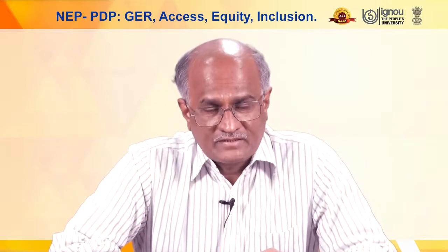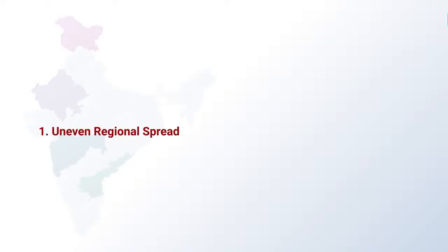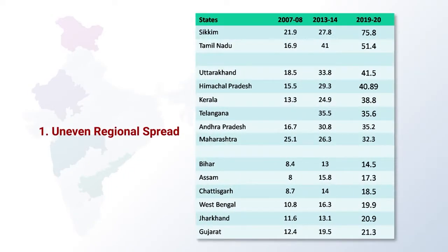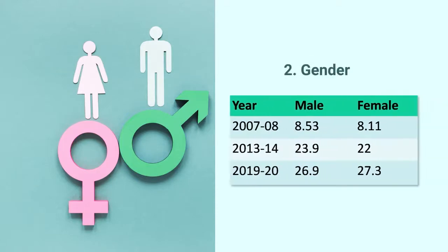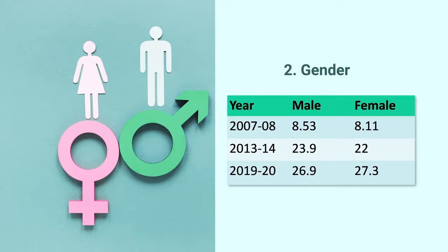What it tells us is the spread of higher education is not uniform across the country, but has been uneven across different states. If we look at gender, it also tells us a story. The pattern is more or less similar between male and female, but one interesting fact in 2019-20 shows that women are increasingly participating in higher education in comparison to men, which is actually a very welcome sign in terms of gross enrollment ratio.